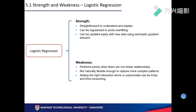Finally, I will state the strength and weakness of three models. As for logistic regression, it has the following strengths: it's straightforward to understand and explain, it can be regularized to avoid overfitting, and it can be updated easily with new data. It also has some weaknesses: it performs poorly when there are non-linear relationships, it's not naturally flexible enough to capture complex patterns, and it can sometimes be tricky and time-consuming.